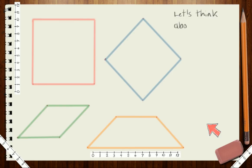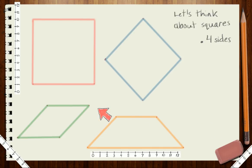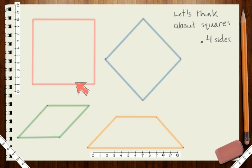What do you know about squares already? The first thing I think about is that squares have to have four sides. Let's check and see. Well, the red shape has one, two, three, four sides — it could be a square.